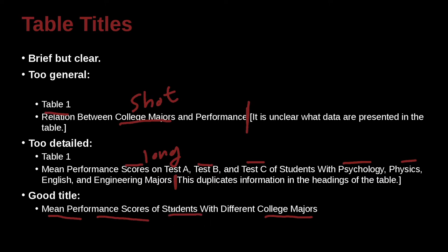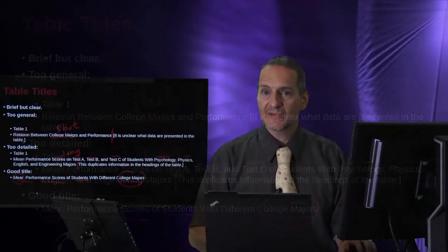So this is a good title for a table, because this table is going to show me the students. The variables are going to be the performance scores. The numbers inside of here are going to be the means, and the subgroups are going to be the college majors.